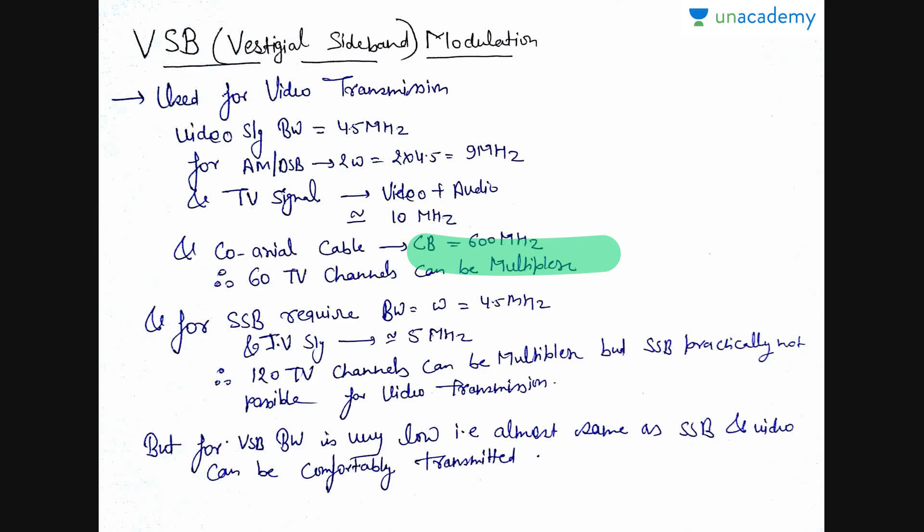It is by dividing this channel bandwidth with this of TV signal bandwidth. That is 600 divided by 10 that is 60 TV channels can be multiplexed. And for SSB, required bandwidth is omega that is 4.5 MHz. So, number of TV channels that can be multiplexed is 120 TV channels. But, it is not possible to transmit the video signal through SSB so we can't use this.